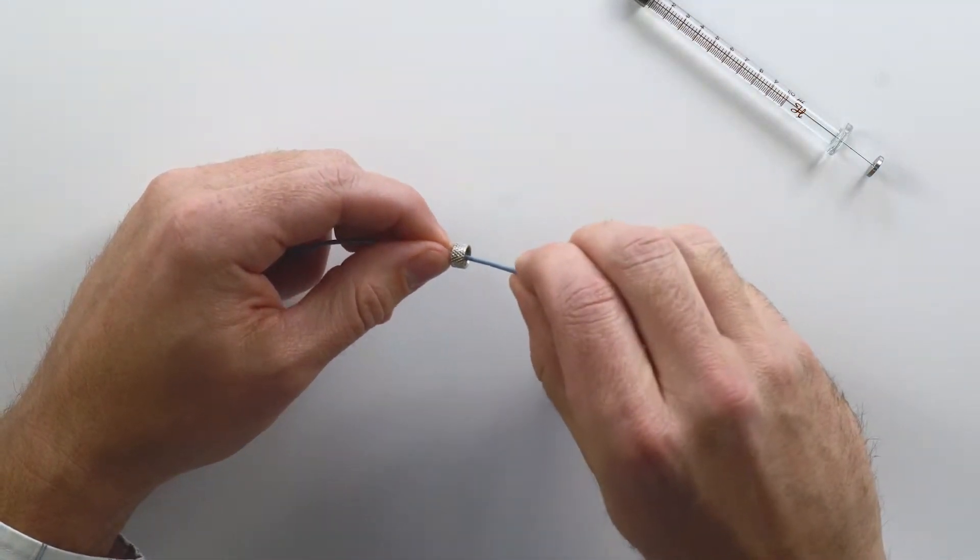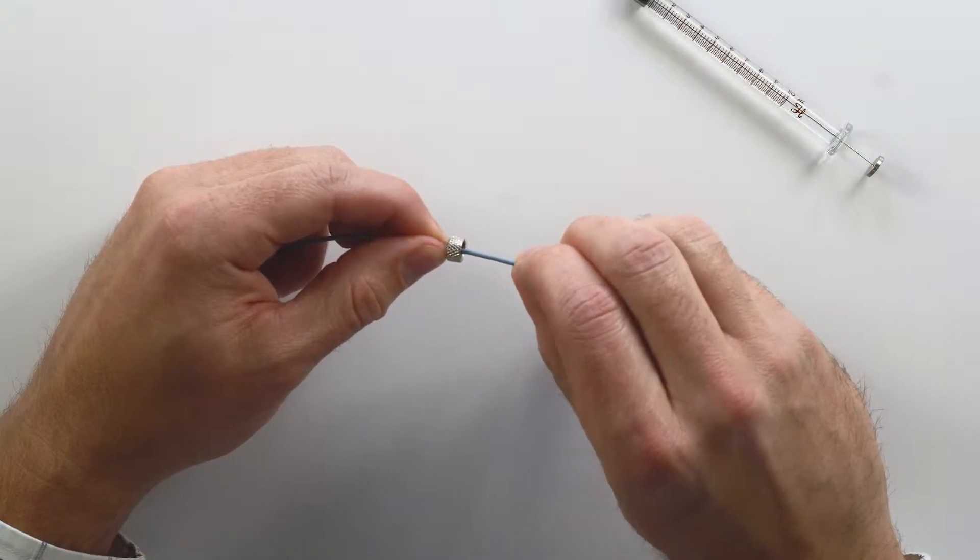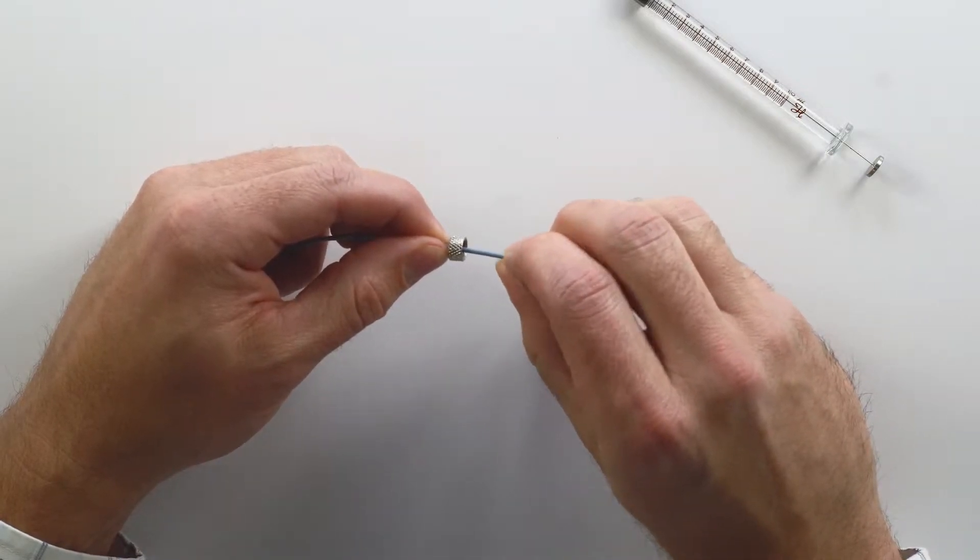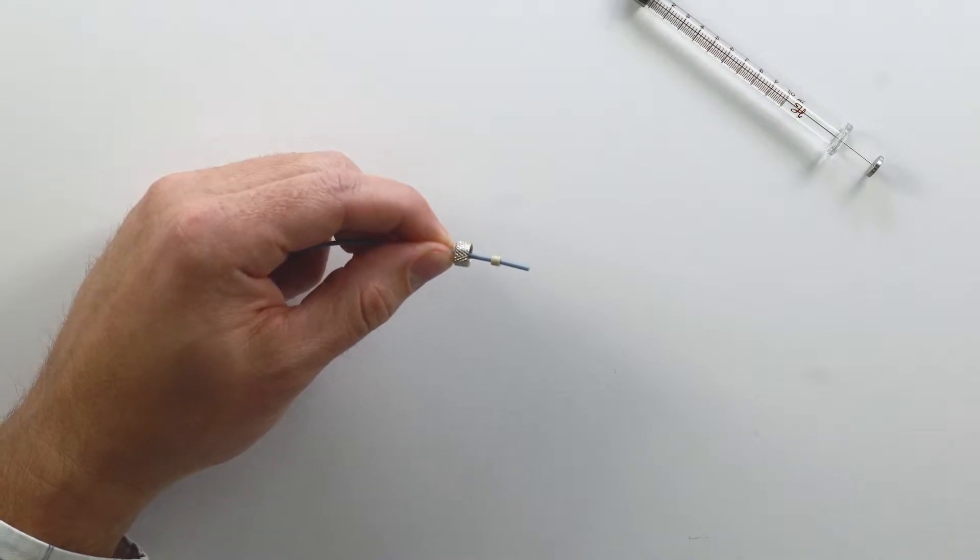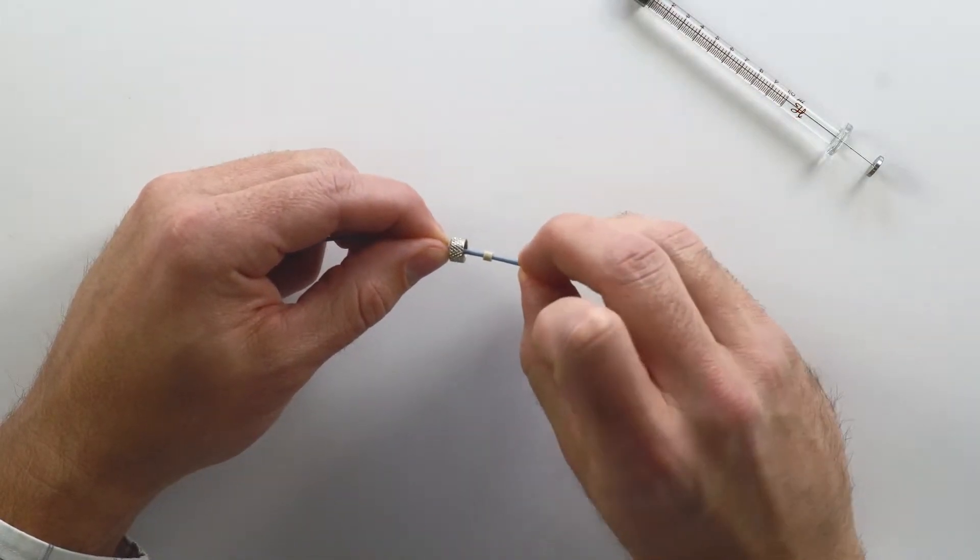Next, install the peak compression fitting with the large ID upwards. After that, install the PFA ferrule and reassemble the syringe.